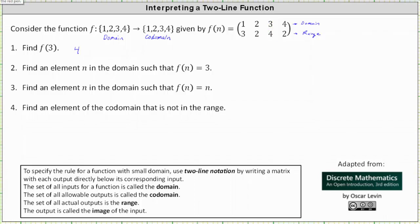We can also say four is the image of the element three from the domain. Number two: find an element n in the domain such that f of n equals three. Notice here we are given the output, or the value in the range, and we're asked to find the input — or we can say we're trying to find the element n in the domain where three is the image. So now we're looking for a three in the second row, which is here. This indicates that f of one is equal to three, which means n equals one is the element in the domain such that f of n equals three.